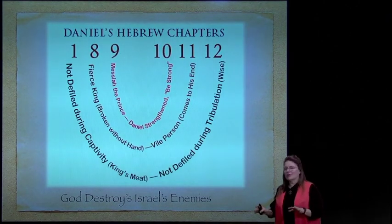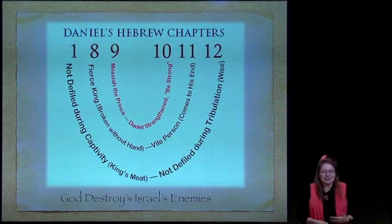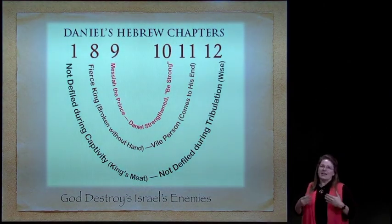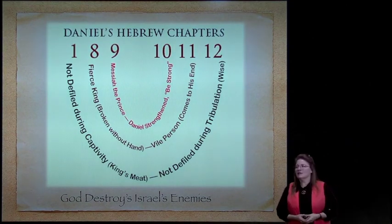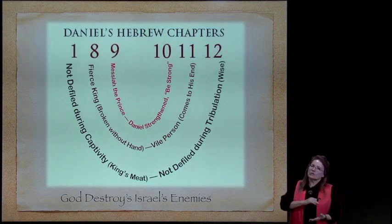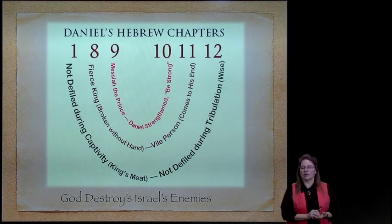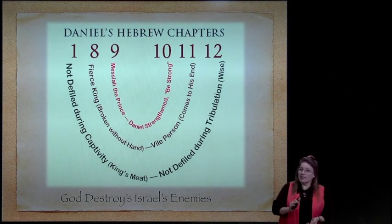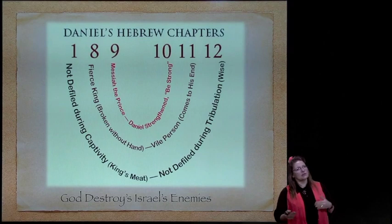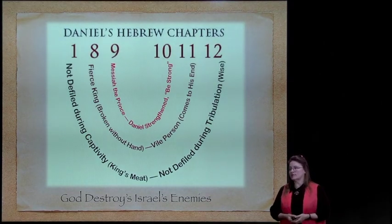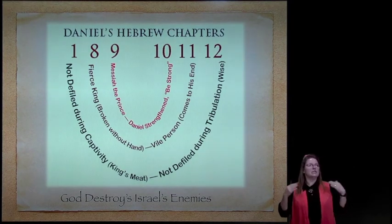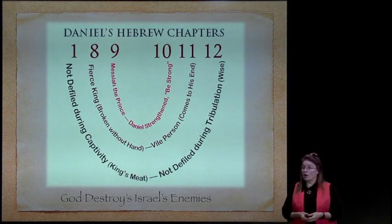Something fascinating is going on with Daniel—just another fingerprint of God, another testimony of these end-time events. Daniel was originally written partly in Hebrew chapters—chapters 8–12 and the first chapter. If you look at the events that happen in those chapters, you find that Daniel is making a chiastic prophecy by chapter to Israel. In chapters 1 and 8–12, in chapter 1, they are not defiled with the king's meat.